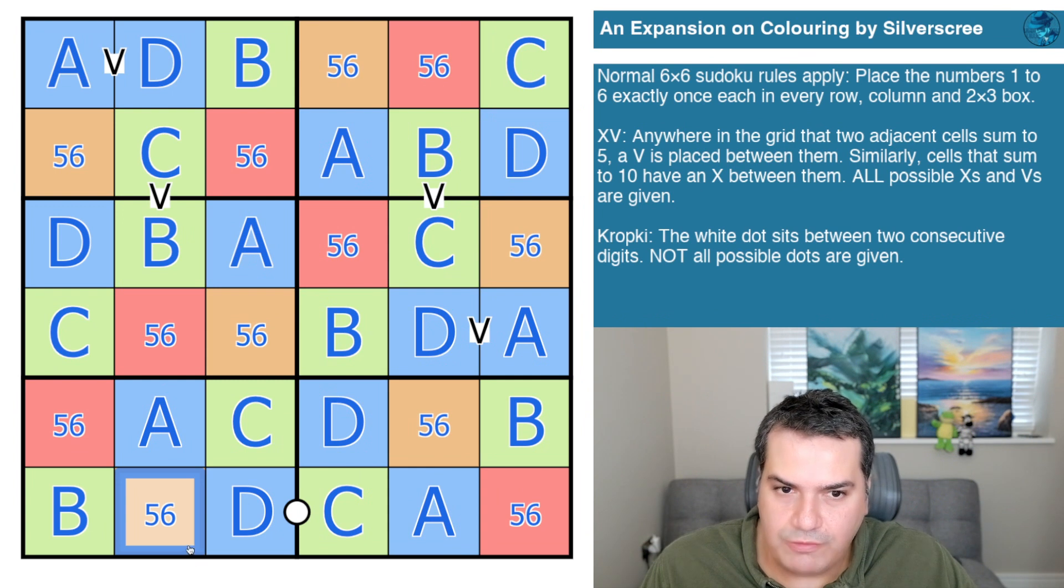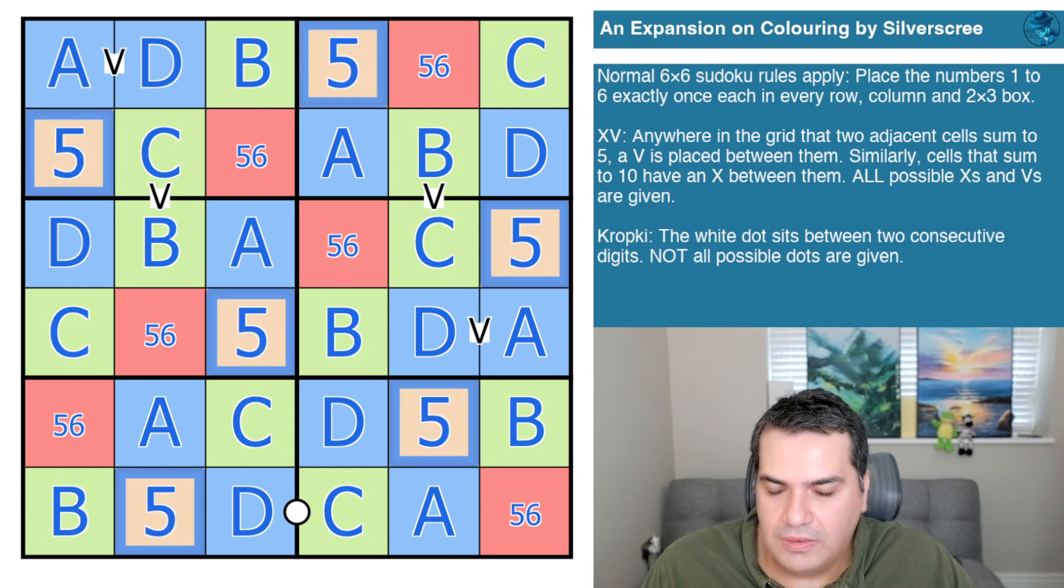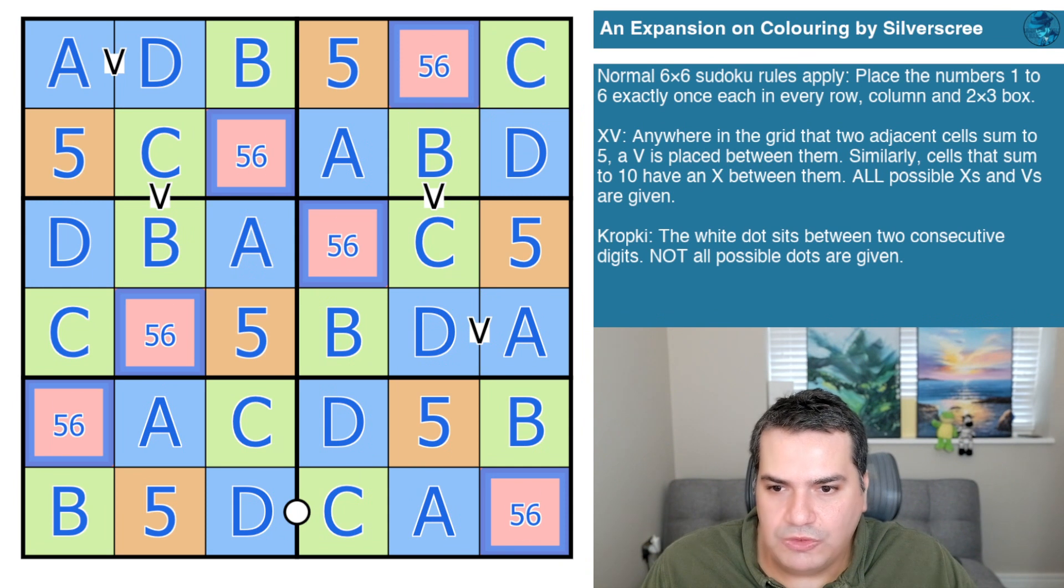So if this was the six, we have broken this puzzle because at least one of them is a four and will be adjacent to the six and there is no X between them. So orange is absolutely a five, red is absolutely a six.